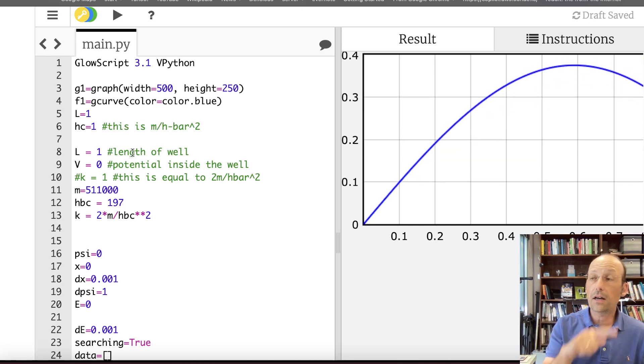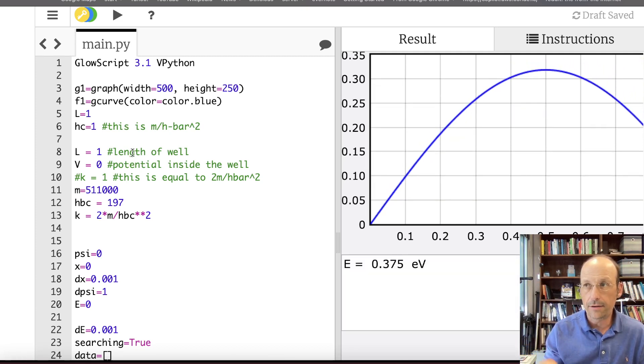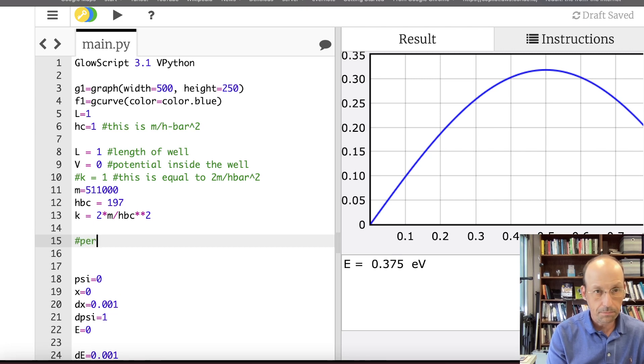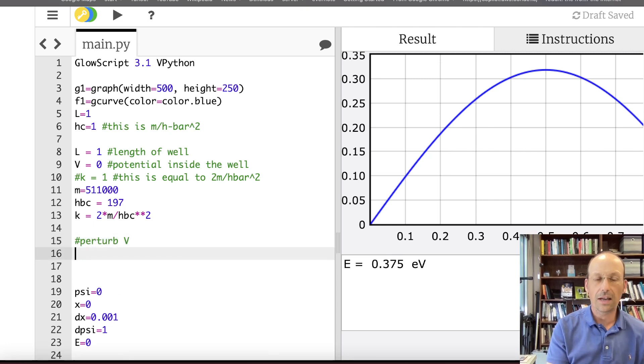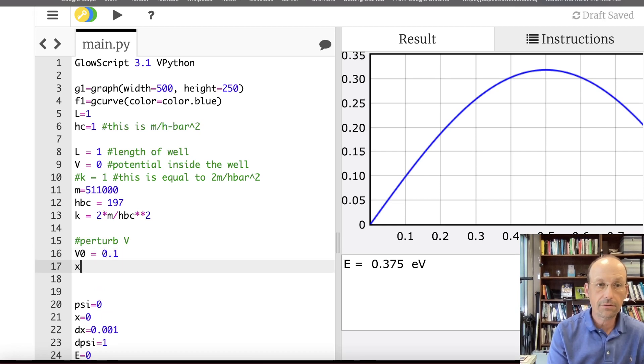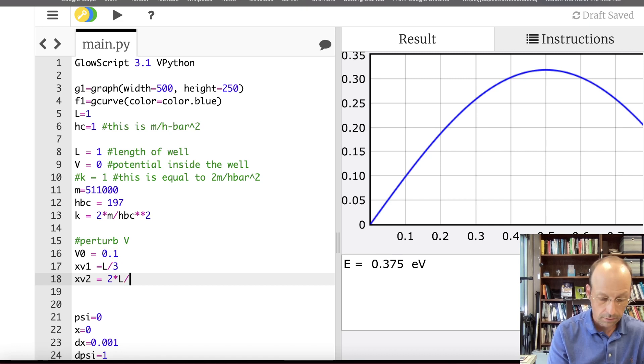Okay, so now the next thing I'm going to do is I'm going to draw my bump in there in red. So we need to pick some things. Let's pick the bump. Let's pick perturb. That's the potential. That's what I'm going to add in there. So I'm going to say V0 equals, I see my energy levels of .37. So let's just try something like 0.1. We can change that. And then I'm going to call XV1 is the start of that potential. And let's say that's L over 3. XV2 is where it ends. And that's 2 times L over 3.